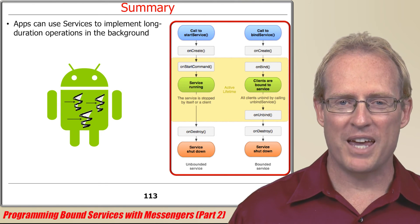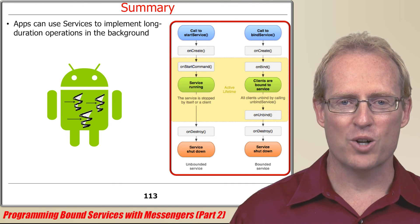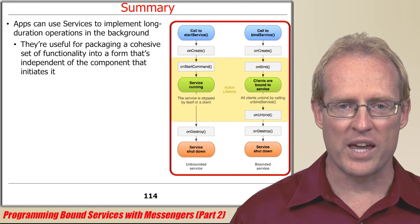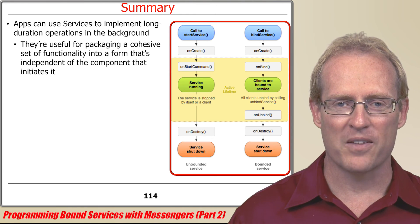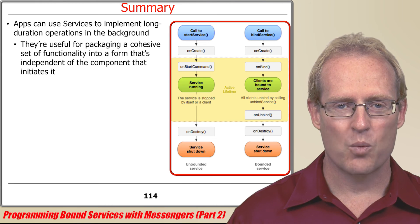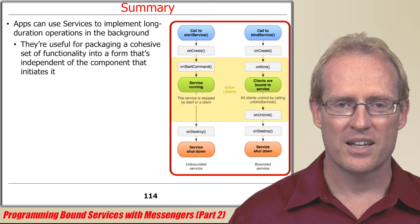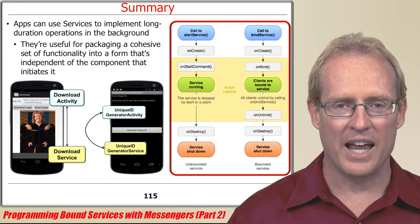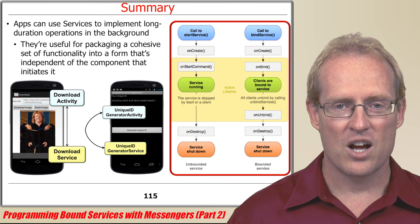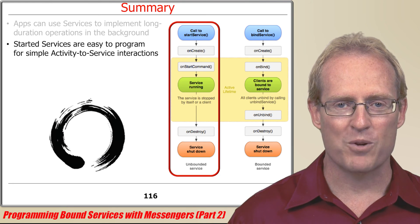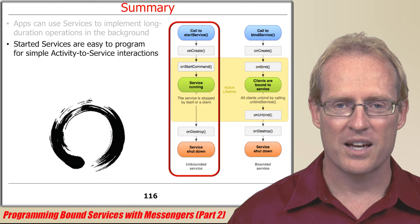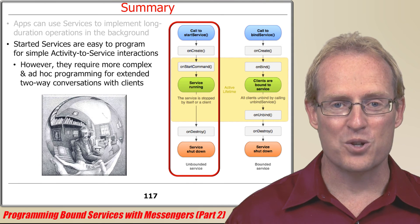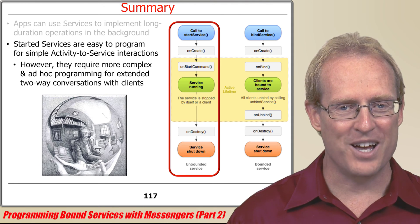In summary, applications can use services to implement long-duration operations in the background. A service is particularly useful for packaging a cohesive set of functionality into a form that's independent of the component that initiates it, which enables the service to be shared by multiple applications. We've examined several services that package functionality for downloading images and generating system-wide unique IDs. Started services are easy to program for simple one-way interactions from an activity to a service. However, they require more complex and ad-hoc programming for extended two-way conversations with their clients.